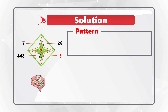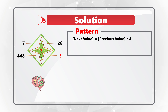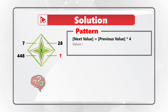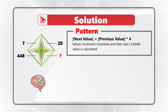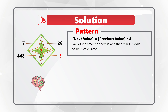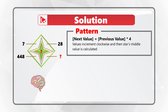The pattern here is that the next value is calculated as the previous value multiplied by 4. Values increment clockwise starting at 11 o'clock, and the missing value in the middle of the star is calculated last.